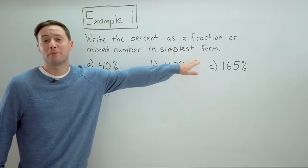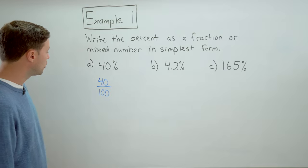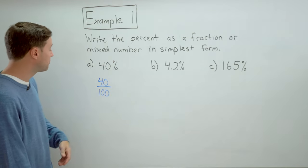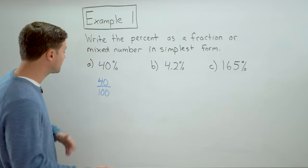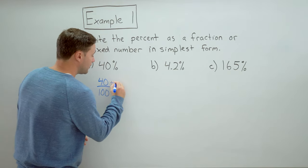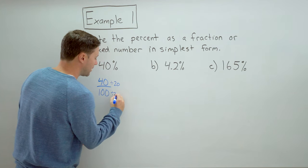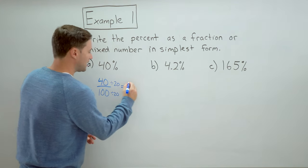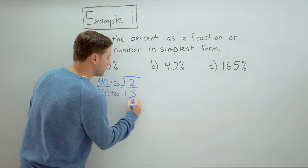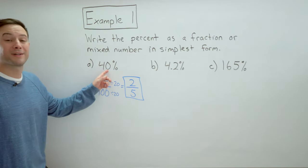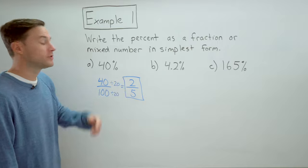But now we have to remember to simplify. So we could obviously divide both by ten. But twenty is actually the greatest common factor. So if I divide the numerator and denominator by twenty, I get two fifths.